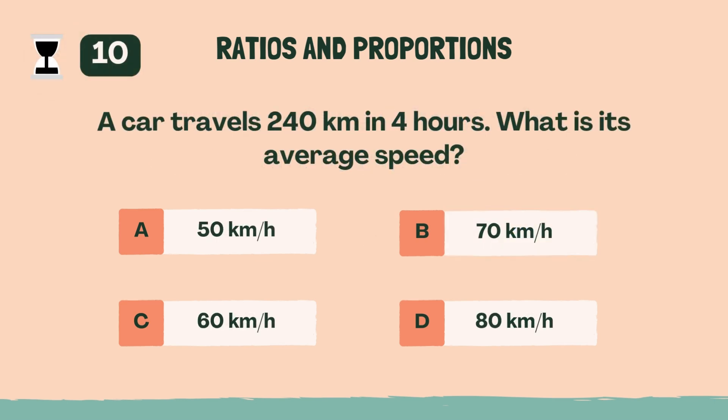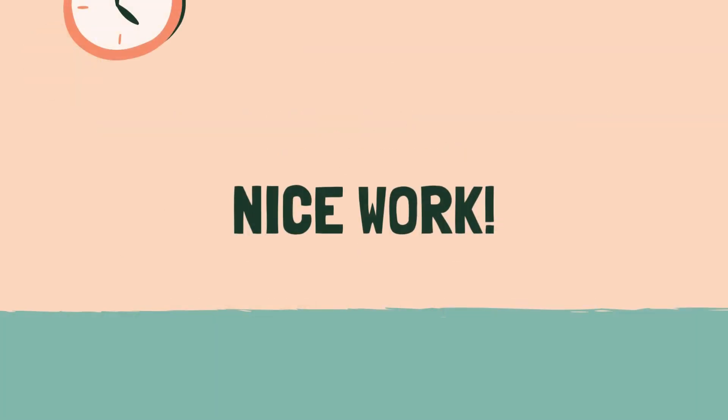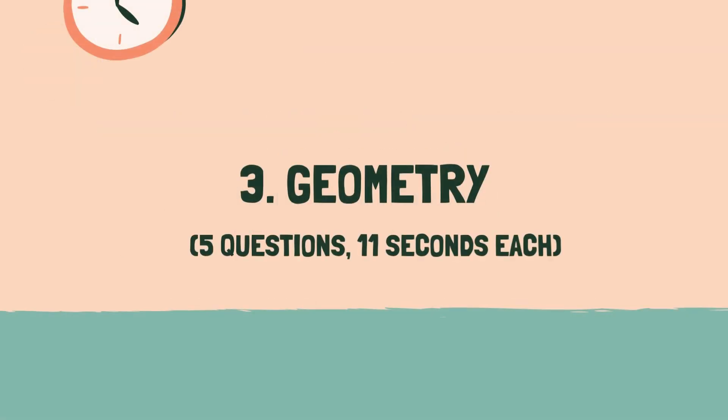A car travels 240 kilometers in four hours. What is its average speed? C, 60 kilometers per hour. Nice work. Time for the next category. Category 3, geometry. Three, two, one, go.